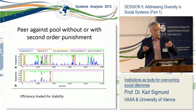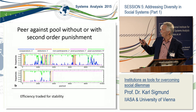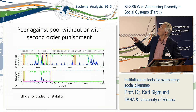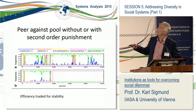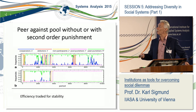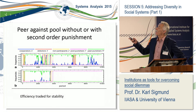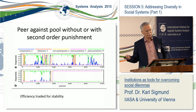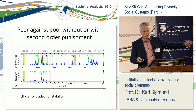This example shows what happens when peer punishment and pool punishment compete. If there is no second-order punishment, then peer punishers will win out — the situation is sometimes unstable, but essentially peer punishing wins. If, however, you introduce second-order punishment — punishment of those who do not contribute to the police — then after a certain initial period there will be a very stable regime of pool punishment. It is not so efficient because you have to pay for the police, but it is a lot more stable.